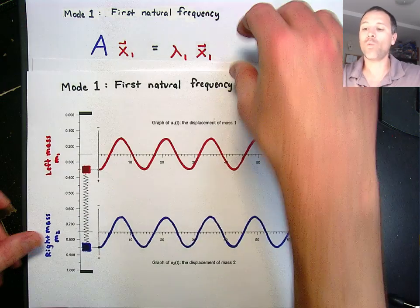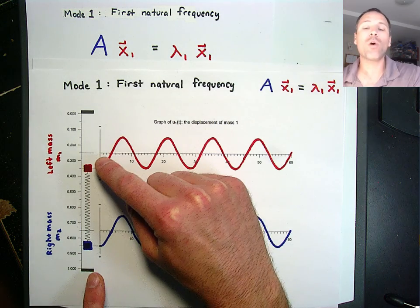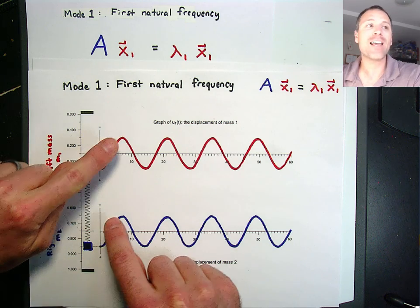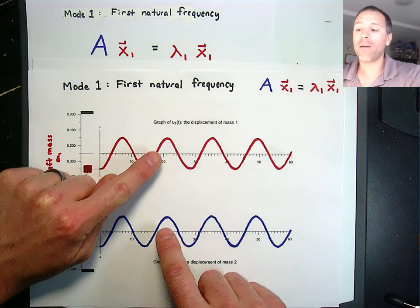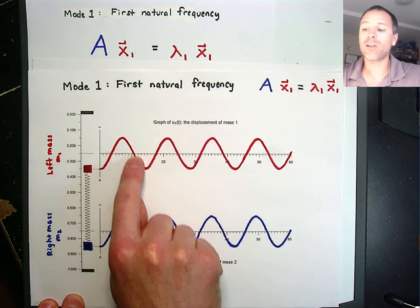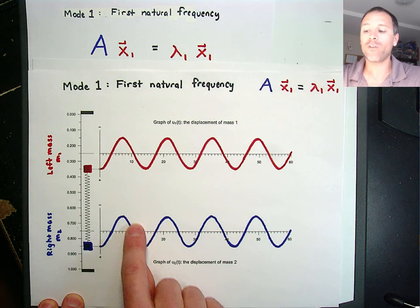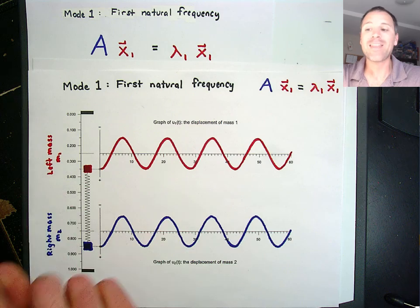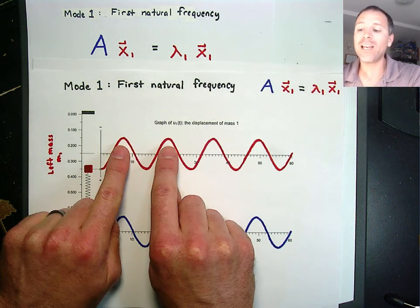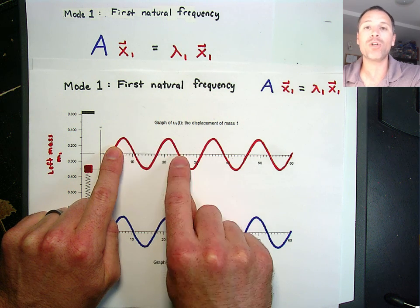In this situation, what will happen is we will perturb, we will displace both masses the same amount, and then as they move together, they're going to kind of be coupled so that the function that describes the left mass is identical to the function that describes the right mass. In that case, the first eigenvalue of the system is going to be related to the period of that motion.